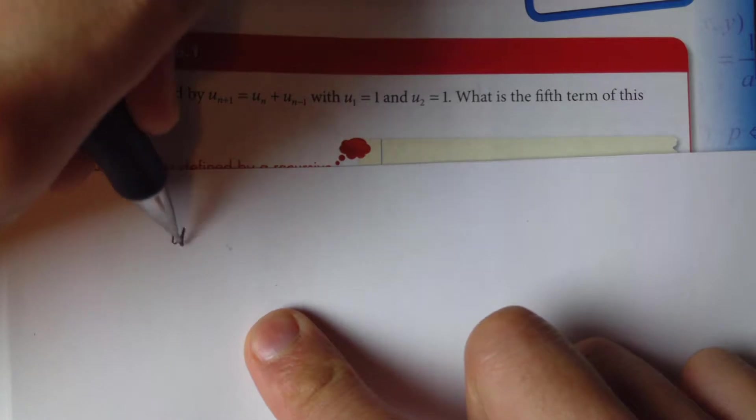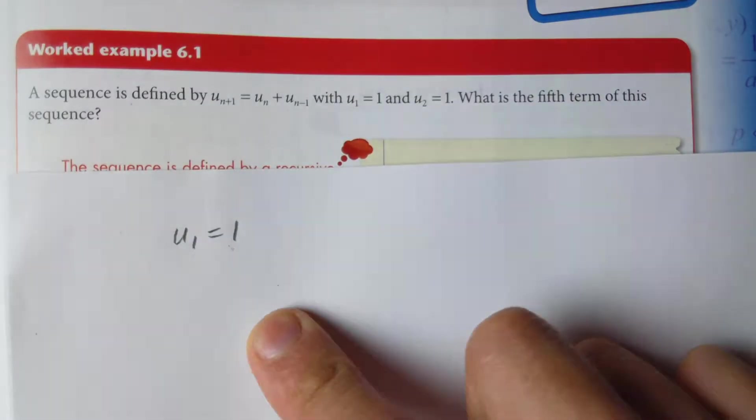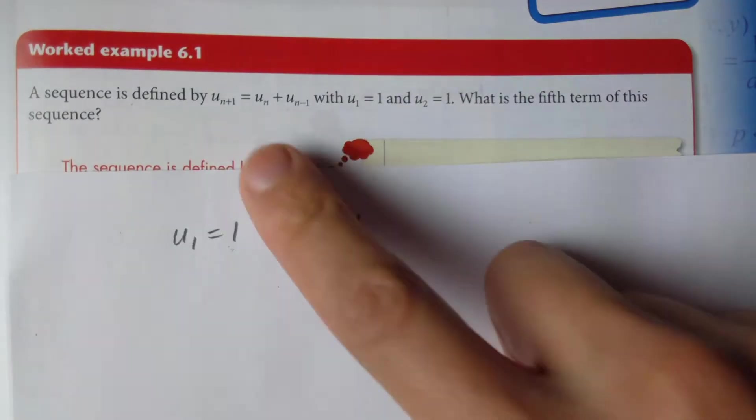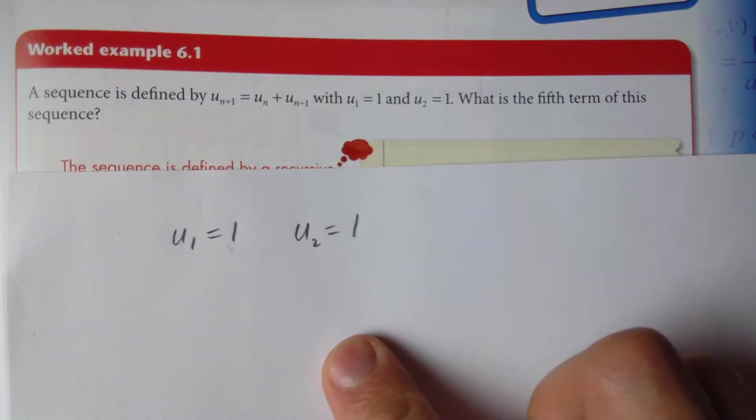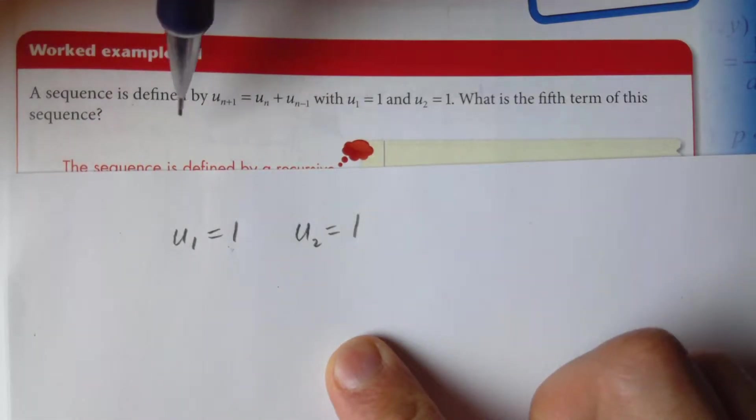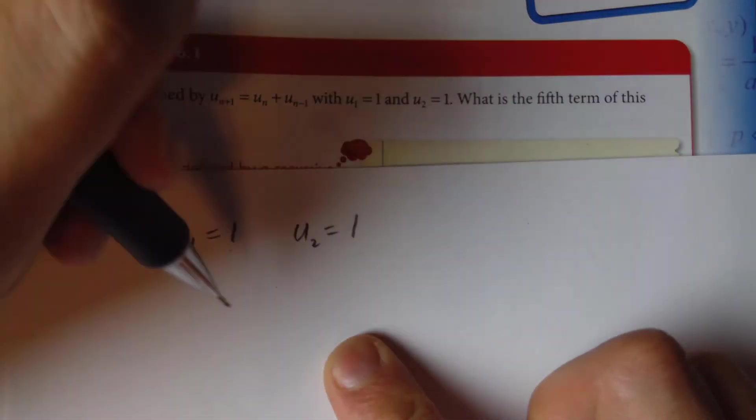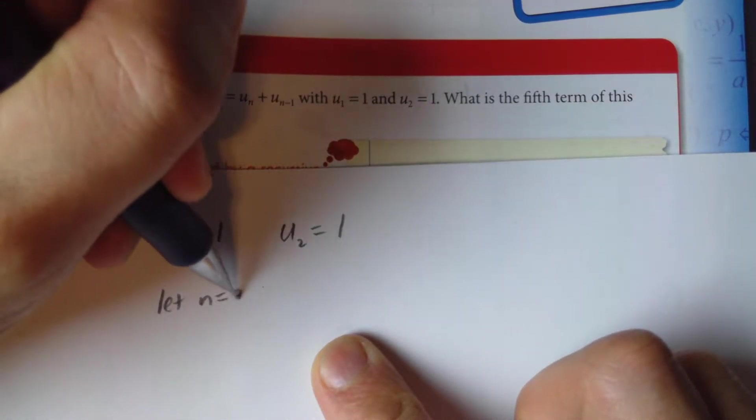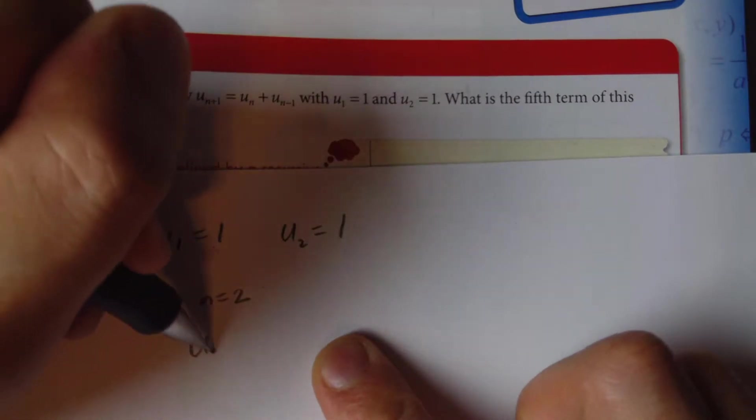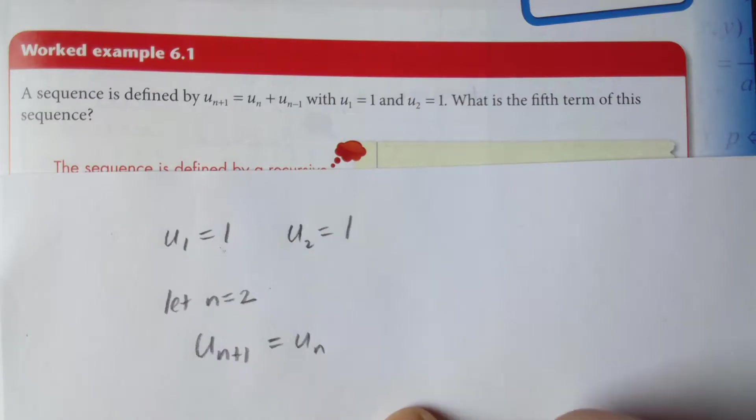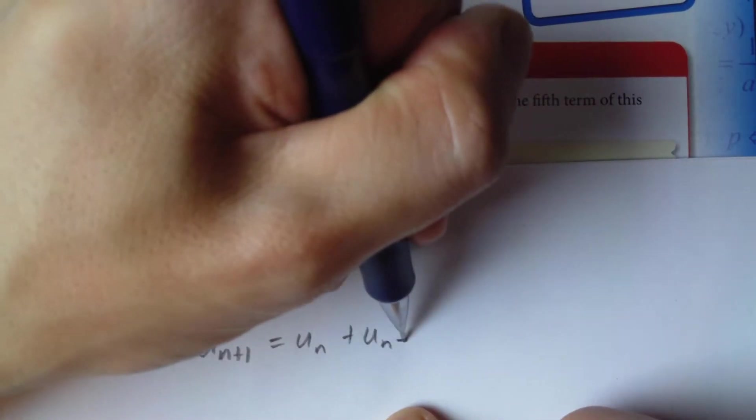So here we have u1 equals 1, and we're given that u2 equals 1. And so what we have here is we're trying to find u3. According to the formula here, we're going to set n equals 2.